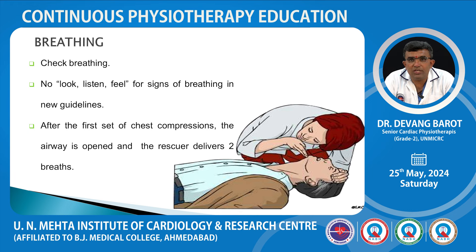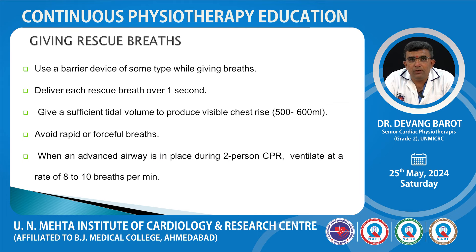After the first set of chest compressions, the airway is opened and the rescuer delivers 2 breaths. When giving rescue breaths, use a barrier device. Deliver each rescue breath over 1 second. Give a sufficient tidal volume — around 500 to 600 ml — to produce visible chest rise. Avoid rapid or forceful breaths. When an advanced airway is in place during 2-person CPR, ventilate at a rate of 8 to 10 breaths per minute.